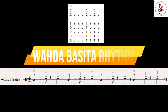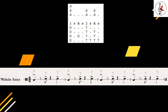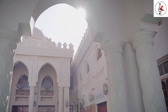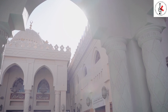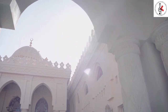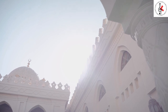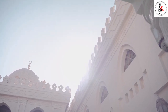Wada Basita refers to a rhythm commonly used in Middle Eastern music, particularly in the Egyptian and Arab musical traditions. Wada means 'one' and Basita means 'simple' in Arabic. The Wada Basita rhythm is a 4/4 time signature with a straightforward and uncomplicated feel. It typically follows a pattern of four equally spaced beats per measure, emphasizing a strong beat on the first count and a lighter beat on the third count. This rhythm is often used as a foundation for various musical genres, including folk, pop, and classical Arabic music, and is commonly performed on percussion instruments such as the Darbuka.